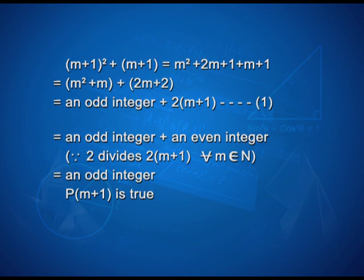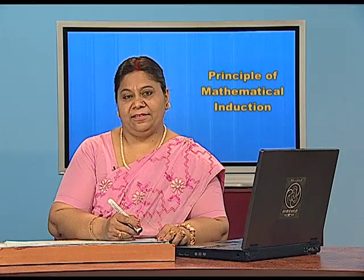Do you remember what is an odd integer and what is an even integer? An even integer is always divisible by 2, and an odd integer is not divisible by 2. For example, 1, 3, 5, 7 are odd integers, and 2, 4, 6, 8 are examples of even integers.